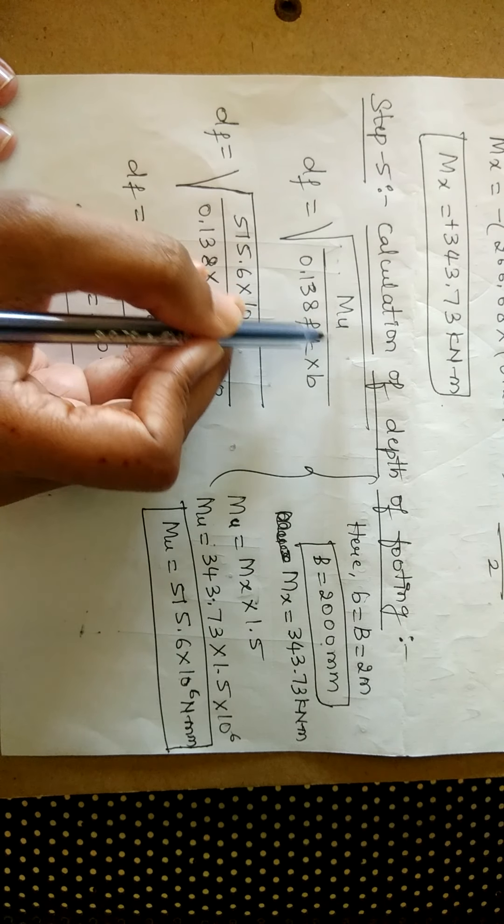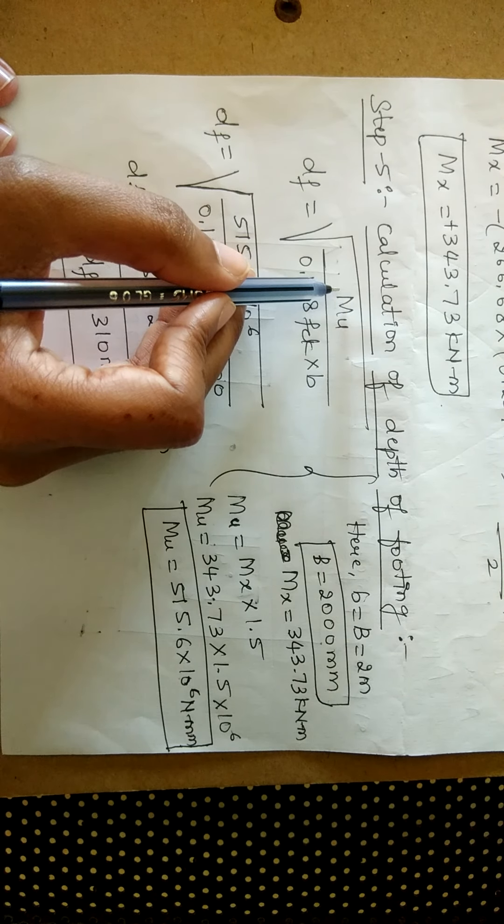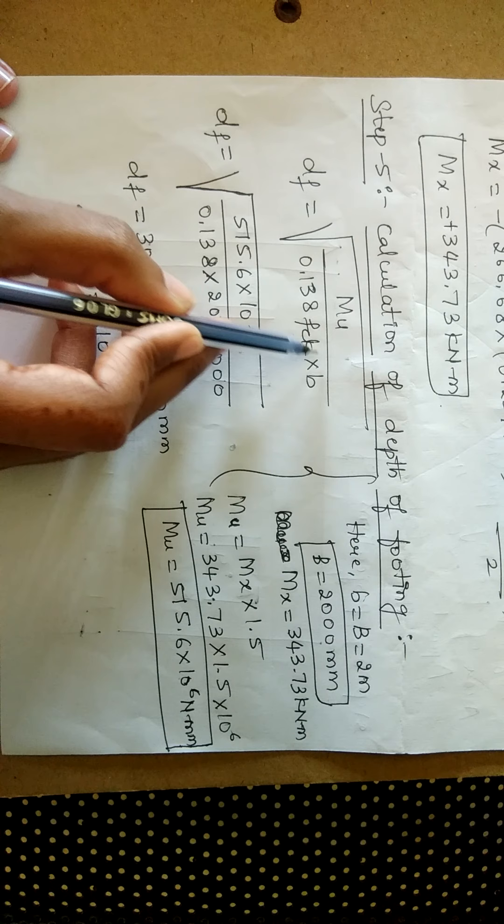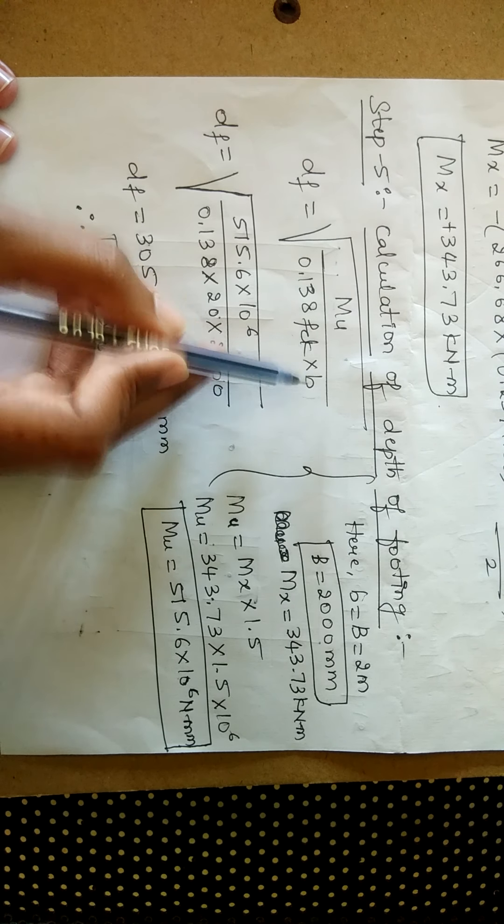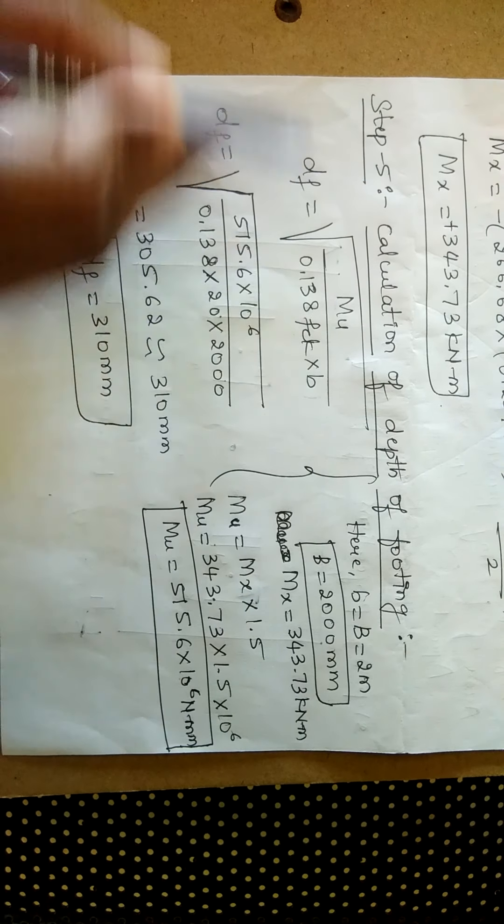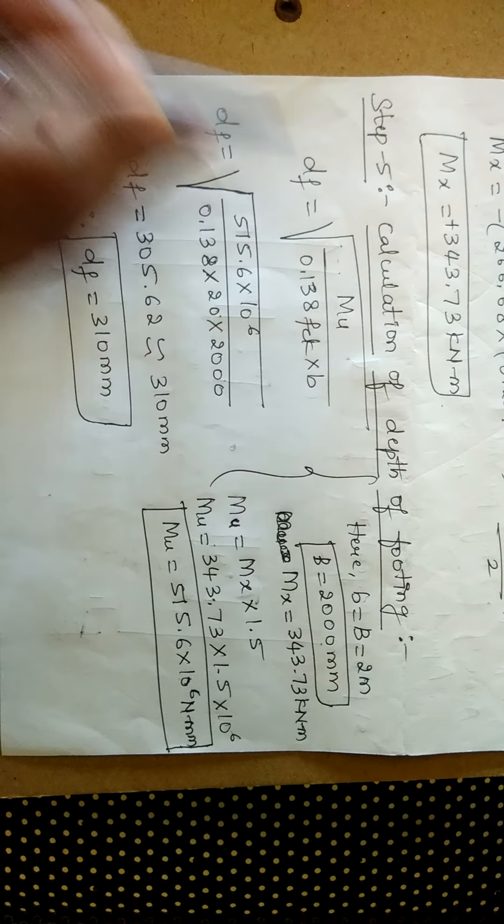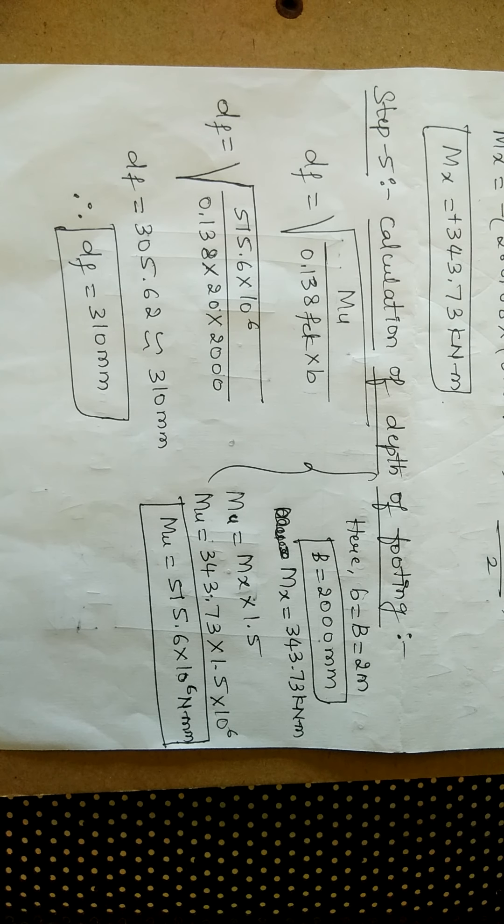fck represents the grade of concrete and b represents the width of the footing, whereas df represents the depth of the footing. So in the question,